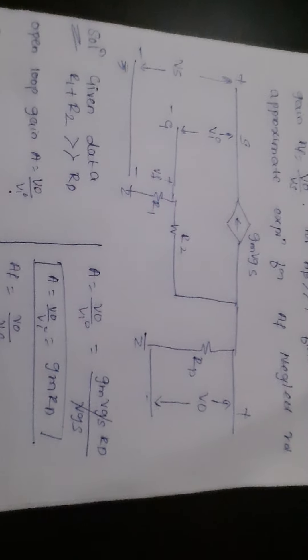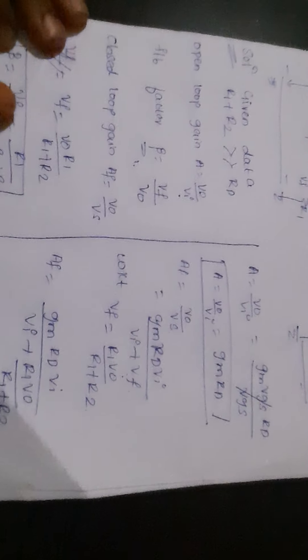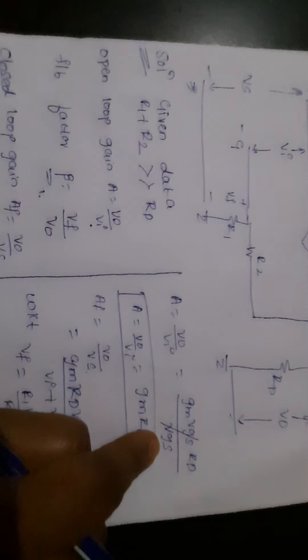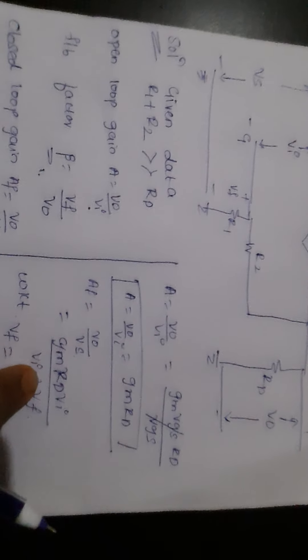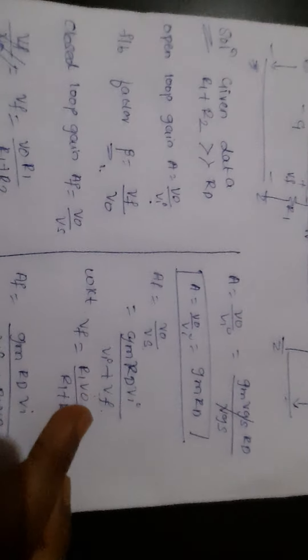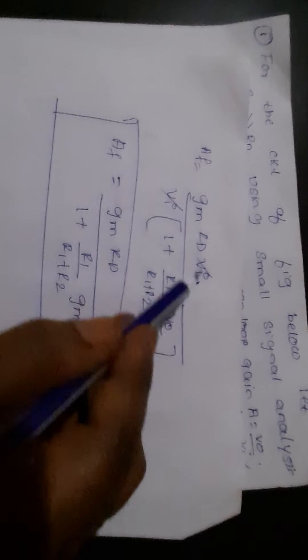To summarize: for this circuit, beta equals Vf upon V_naught equals r1 upon r1 plus r2. The open loop gain A equals V_naught upon Vi equals gm·rd, since gm·Vgs·rd divided by Vgs gives gm·rd. The closed loop gain AF equals V_naught upon Vs, derived by substituting Vf into gm·rd·Vi divided by Vi plus Vf, taking Vi as common, which gives the final answer.